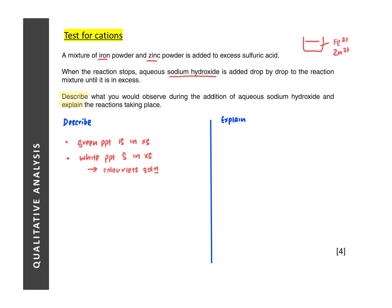So for this question, you need to describe and explain. So there are two parts to the question. Next, you need to explain your observations. Green PPT is due to the formation of iron 2 hydroxide, which is your green PPT, and the white PPT is due to the forming of zinc hydroxide. Now, the dissolving of your white PPT in excess sodium hydroxide is due to the formation of a complex ion. In our syllabus, in the O-level syllabus, we don't learn about the complex ion. So there's no need for you to identify or to explain what is actually happening. So the four marks will be the four points that are given in here.